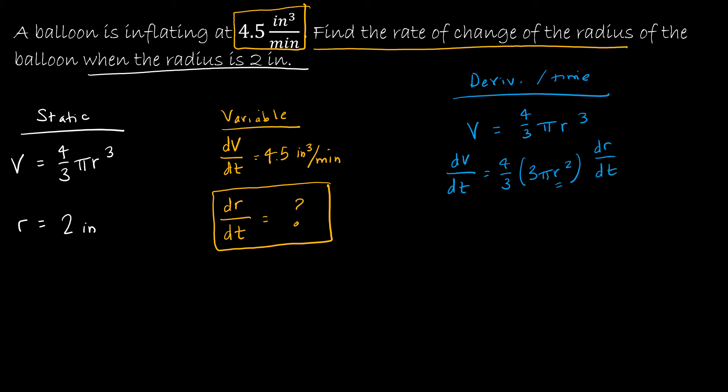So now let's see what we can simplify. dV over dt is 4.5 cubic inches per minute. You don't have to write the labels in your work. Obviously you need to label at the end, but it's okay to not write it in your work. What else do I have? 4 thirds and 3 obviously is going to reduce to 4. So I have 4 pi, and then do I have r? Well I sure do. I have r is 2 inches, so 2 squared. And then dr over dt, as we know, is my unknown. So dr over dt is what I'm going to end up solving for.